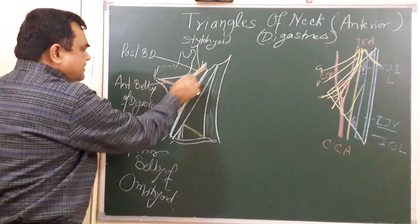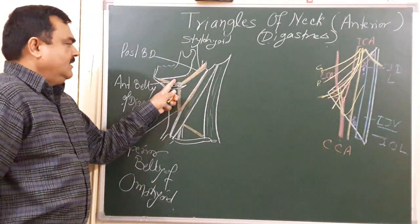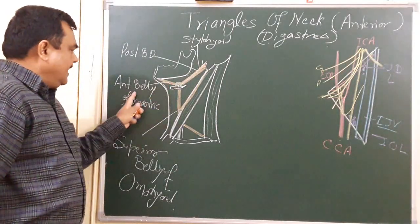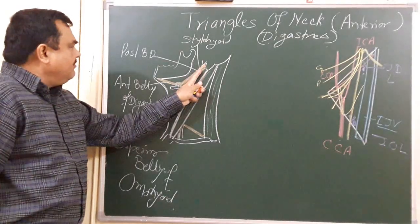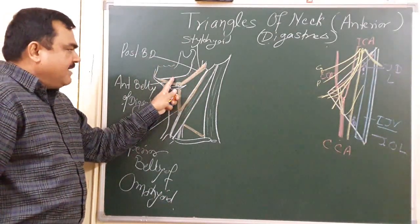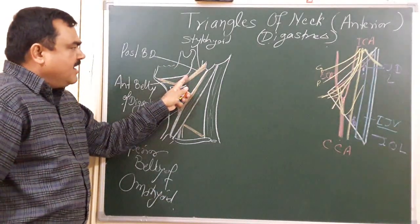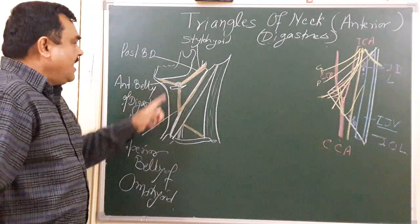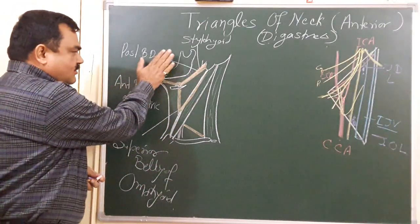Crossing this line, this triangle is the digastric triangle. The anterior inferior boundary is formed by the anterior belly of the digastric. The posterior inferior boundary is formed by the posterior belly of the digastric. The superior boundary is formed by the base of the mandible and a line joining the angle of the mandible to the mastoid process.